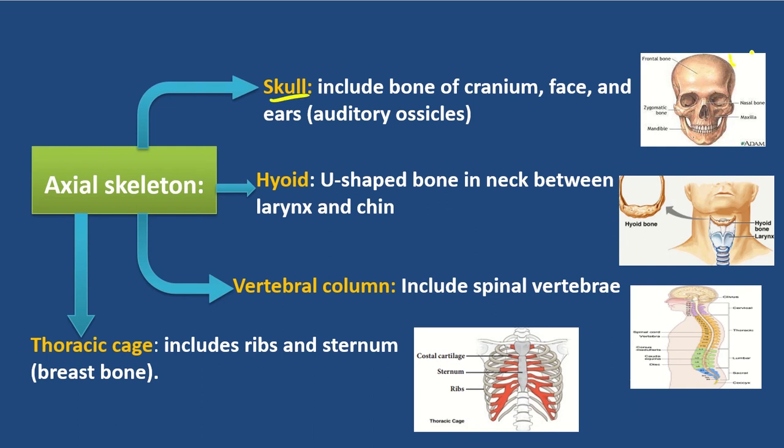The axial skeleton includes bones of the cranium, face, and ears.